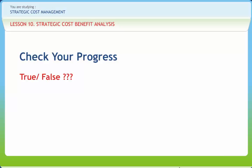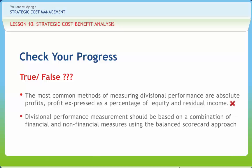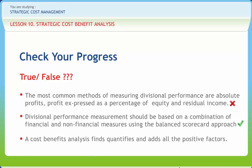Now let us check if we have understood the various concepts discussed in this lesson clearly. The most common methods of measuring divisional performance are absolute profits, profits expressed as a percentage of equity and residual income — Right or Wrong? Wrong. Divisional performance measurement should be based on a combination of financial and non-financial measures using the balanced scorecard approach — Right or Wrong? Right. A cost-benefit analysis finds, quantifies and adds all the positive factors — Right or Wrong? Right.